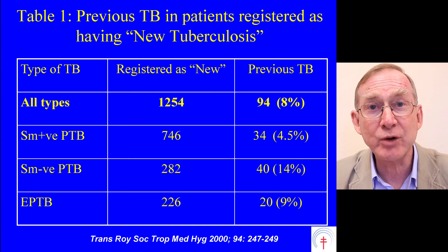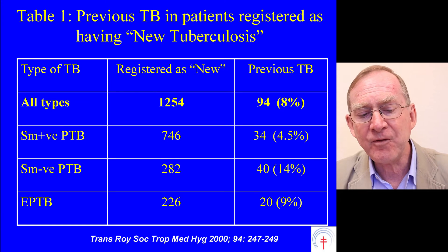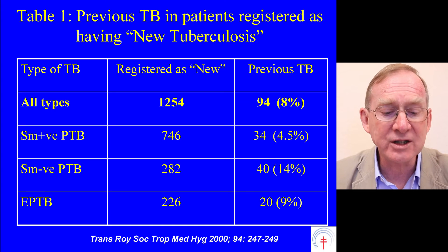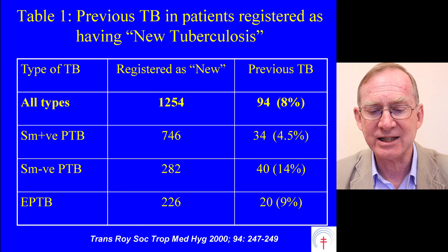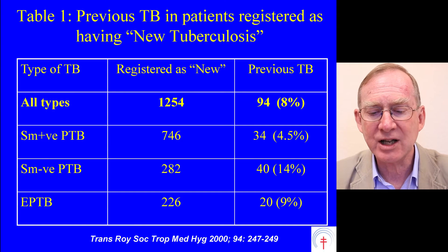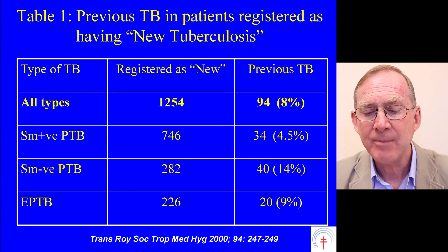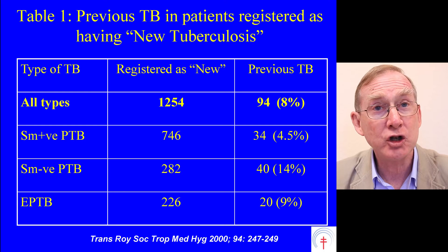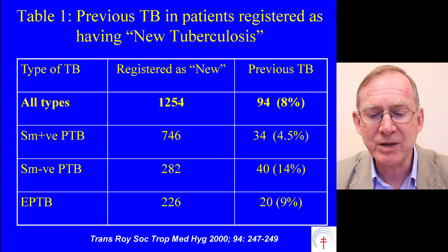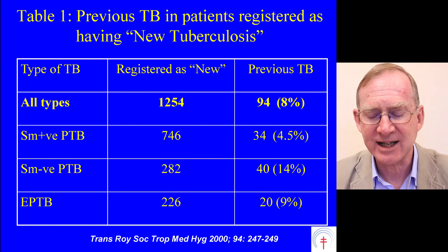The table has three columns with headings: type of TB, registered as new, and previous TB. In the first column we have the characteristics: all types, smear positive pulmonary TB, smear negative pulmonary TB, and extra pulmonary TB. The data shows 1,254 patients, 94 of them having previous TB — that being 8%. For each different type of TB, we have the numerator, the number registered as new TB, and the number and percentage with previous tuberculosis shown on the right-hand side.